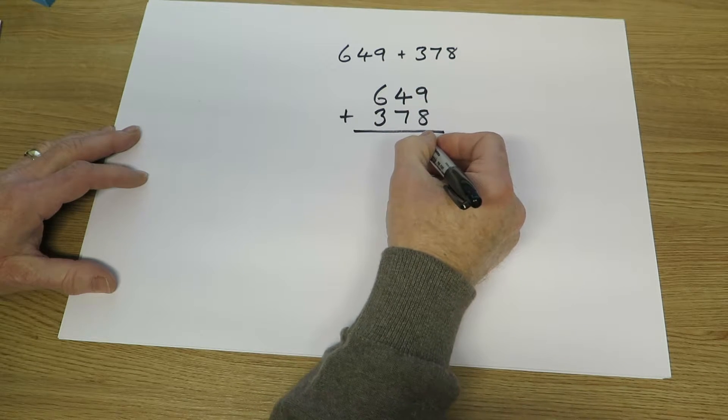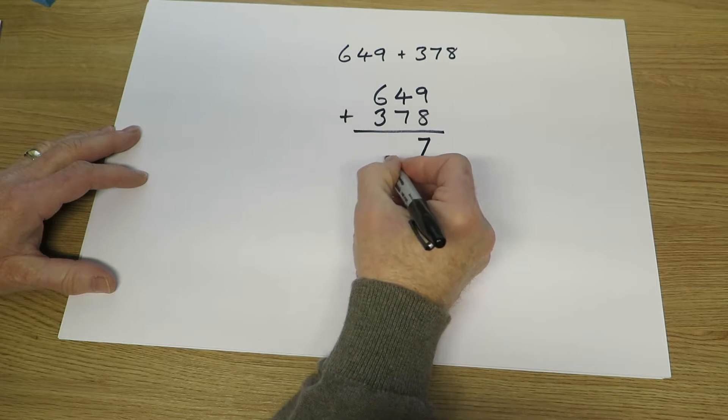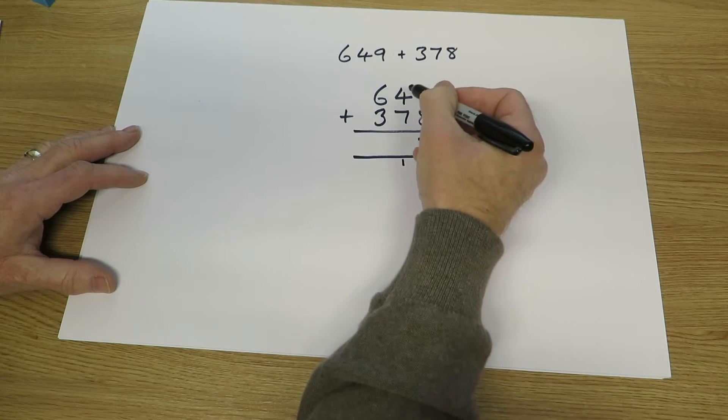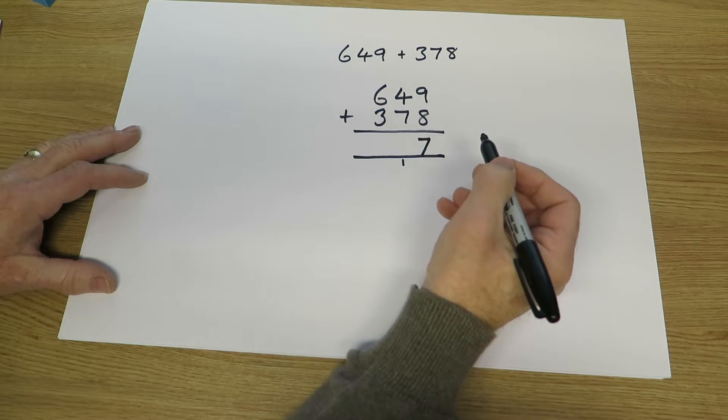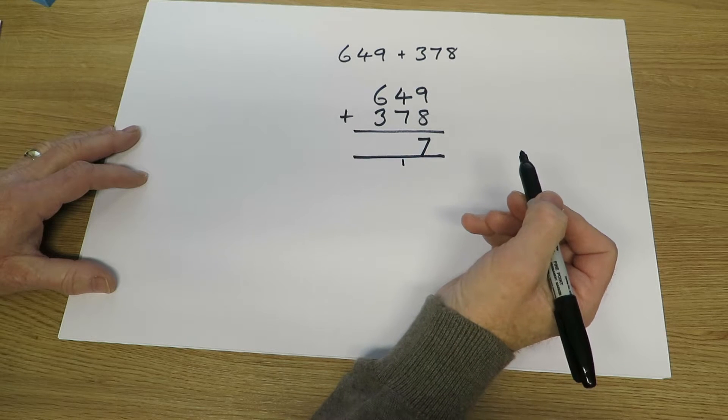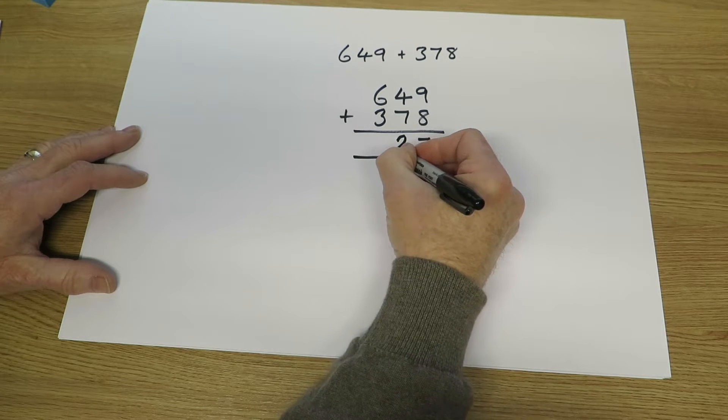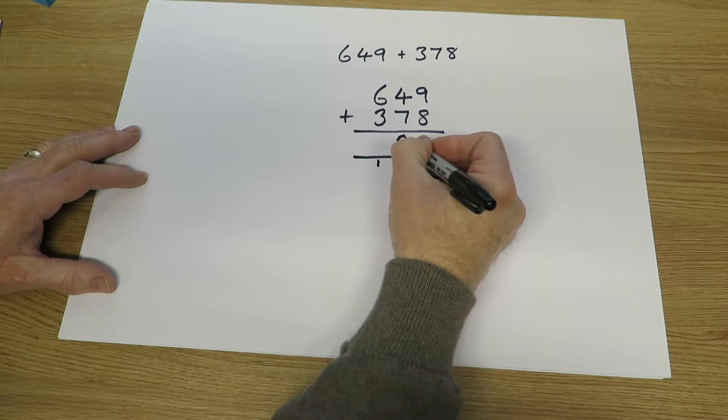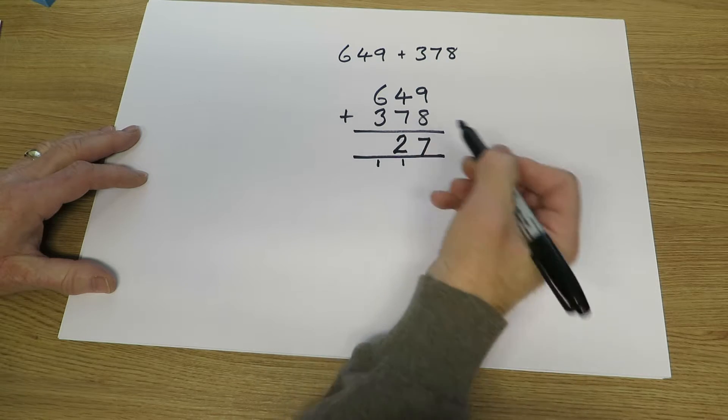9 add 8 is 17 so a 7 there and what we sometimes call a carrying one down there, very small. 4 add 7 is 11 tens. 4 tens and 7 tens is 11 tens. One more ten, that's 12 tens. So we leave two in the tens and take one to the hundreds. Still says 12 tens but it's 100 and two tens.